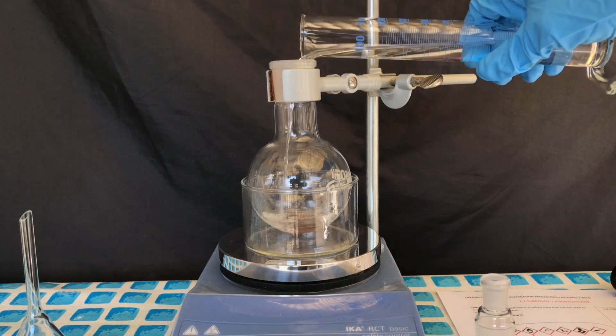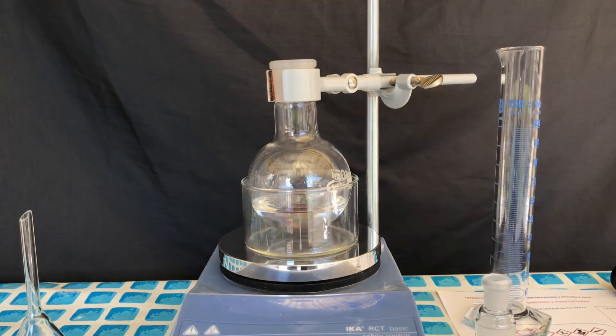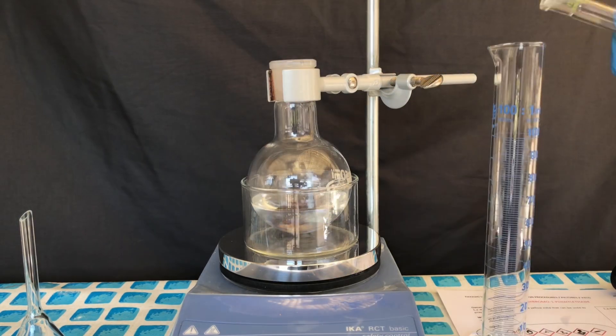While being careful to keep the ground glass joint somewhat clean, the styrene was added, followed by about 50 ml of dichloromethane.